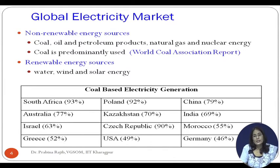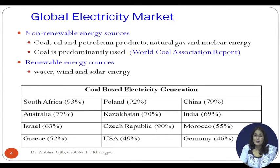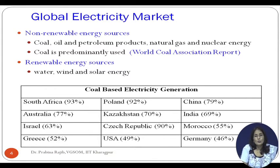Looking at the global electricity market, mostly non-renewable energy sources are predominantly used for electricity generation, though renewable energy sources such as solar, wind, and water are increasingly being used. However, coal-based electricity generation — thermal power — remains the maximum share. For example, South Africa has 93 percent of total electricity generated from coal, while Germany has the lowest at around 46 percent.